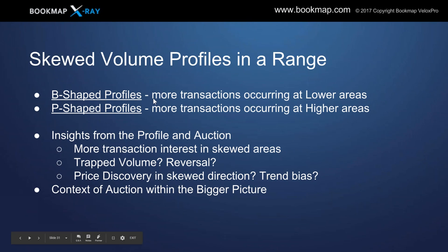Let's look at skewed volume profiles. This gives insight to the price action within that range. We're going to talk about B-shaped profiles and P-shaped profiles. In a B-shaped profile, there are more transactions occurring at lower areas; in a P-shaped profile, more transactions at higher areas. The insights it can give depend on context — higher time frames make a difference. Is it going to be trap volume at those lower or higher areas, or will you see reversal? Will there be price discovery outside of that range and a trending environment? It's all contextual within the bigger picture.